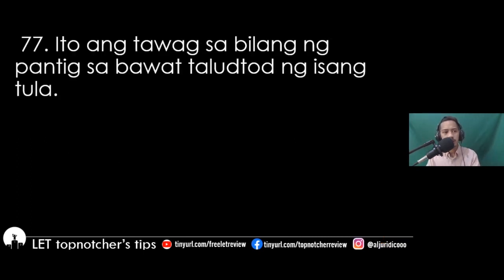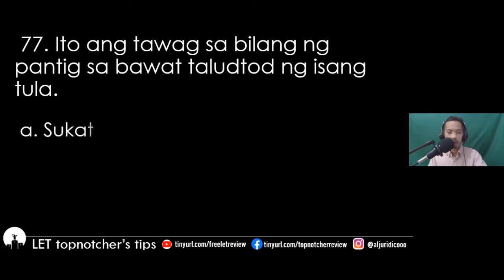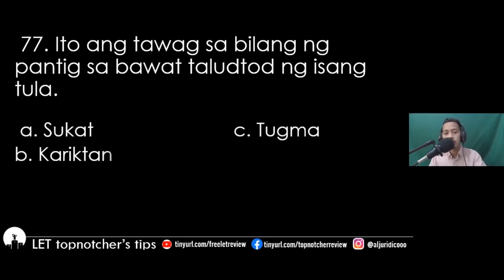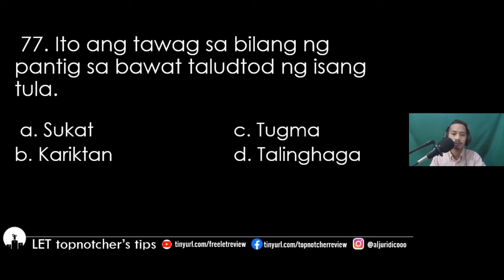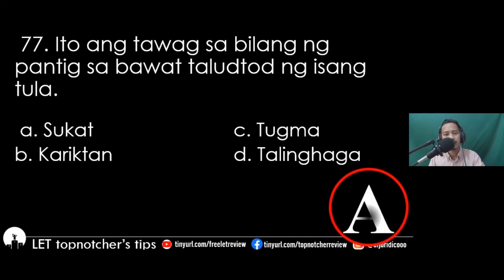Item 77 (Filipino): Ito ang tawag sa bilang ng mga pantik sa bawat taludtod ng isang tula. A) sukat, B) karitan, C) tugma, D) halinhaga. Ang sagot ay letrang A, sukat.